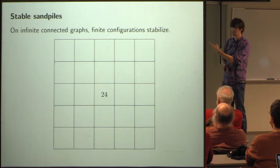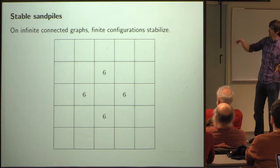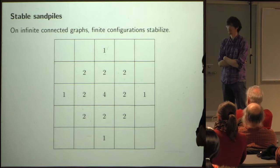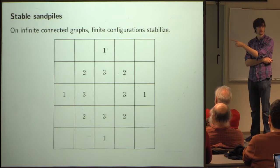For example, if we start with 24 chips at a single site, that's going to topple six times. After it's toppled six times, there are six chips at each of the four neighbors, and now each of those topples once. You get some configuration, and then there are chips back sent to the origin, so that topples again, and you end up with a final stable configuration.